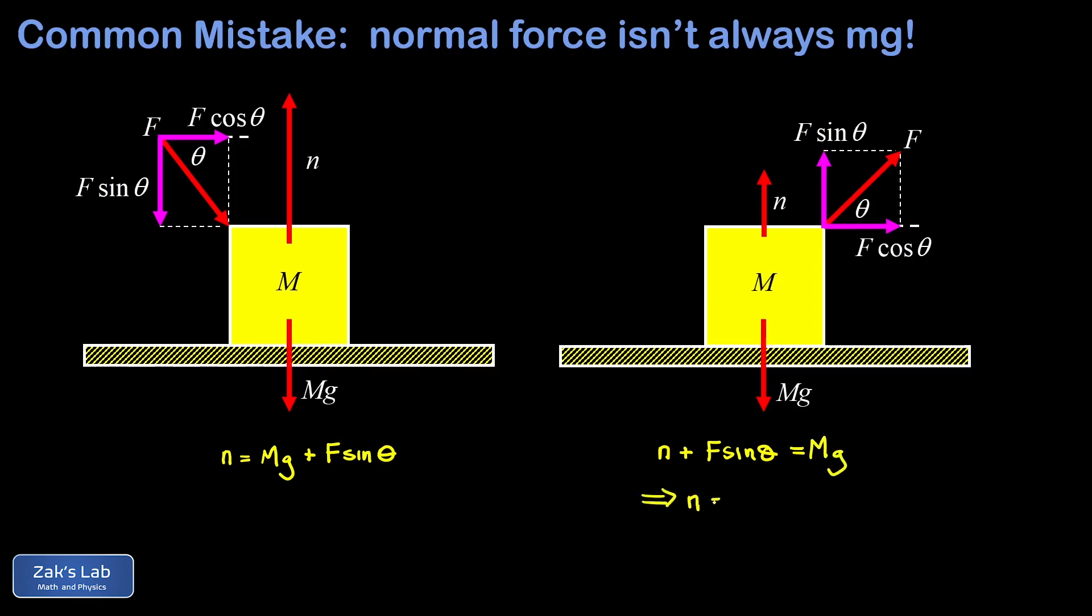This means our normal force is given by mg minus F sine theta. So here's a case where the normal force ends up being less than the weight of the object. Intuitively, we say that our upward force is helping the normal force to support this object against the force of gravity. So the normal force doesn't have to push as hard to support the block.